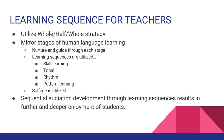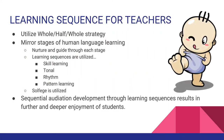The learning sequence for teachers also follows the whole-part-whole strategy — you teach things that way and mirror the stages of human language learning. You nurture and guide each student through each stage. Learning sequences are utilized: skill learning, tonal, rhythm, pattern learning, and solfege. You introduce students to meter without telling them it's meter, introduce them to sound and different instruments without labeling them, and then slowly they understand. Sequential audiation development through learning sequences results in further and deeper enjoyment — if students experience and gain understanding themselves through the different sequences, they enjoy it more.